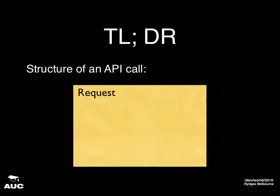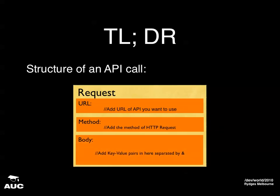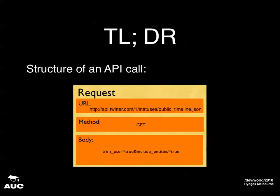Just to recap: the structure of your API call is you have a request with a URL associated with it, a type of method — whether GET, POST, or what have you — and a request body. That body will have all the parameters. This here is an example using the public timeline Twitter API call — it's got a couple of extra body things, but that gives you an idea of something that's actually real.